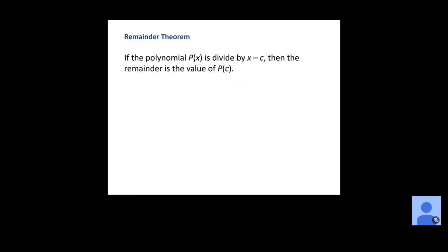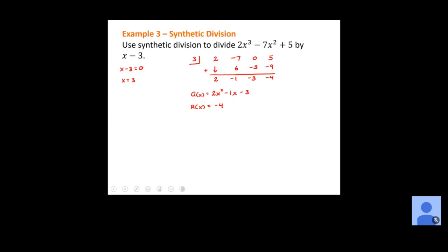The Remainder Theorem: if P of X is a polynomial and we divide it by x minus C, the remainder is the value of P of C. Going back to the example we just did, our C value was 3. So if P of X is 2x cubed minus 7x squared plus 5, then P of 3 should equal the remainder, which is negative 4.